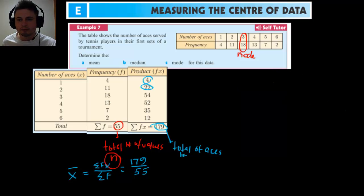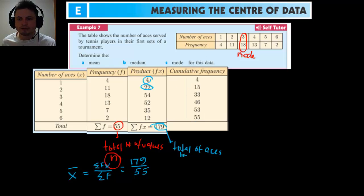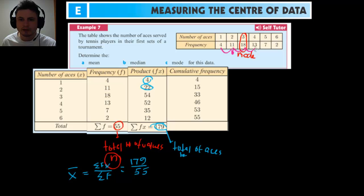To find the median, we'll use something called cumulative frequency — frequency as it accumulates throughout the table. Starting with the first frequency of 4, then 4 + 11 = 15, then 15 + 18 = 33, then 33 + 13 = 46, then 46 + 7 = 53, and 53 + 2 = 55. Writing these cumulative values down in order helps you find the median just using the table.